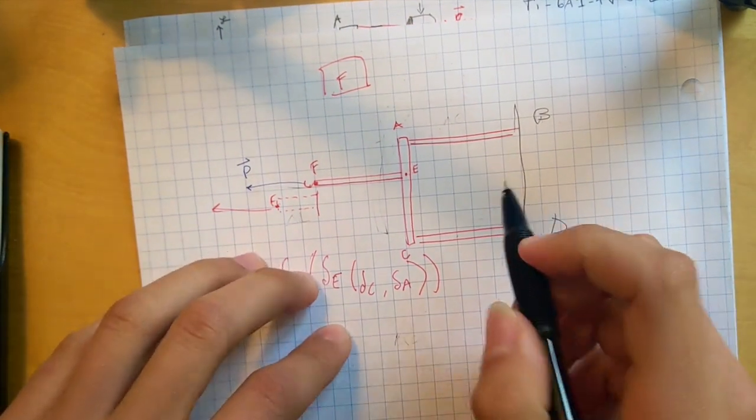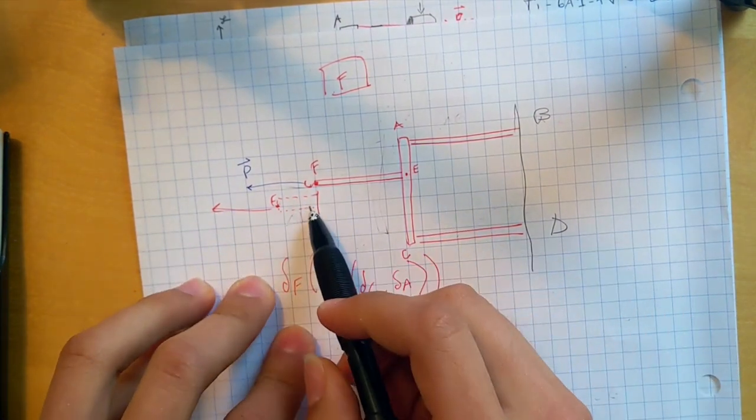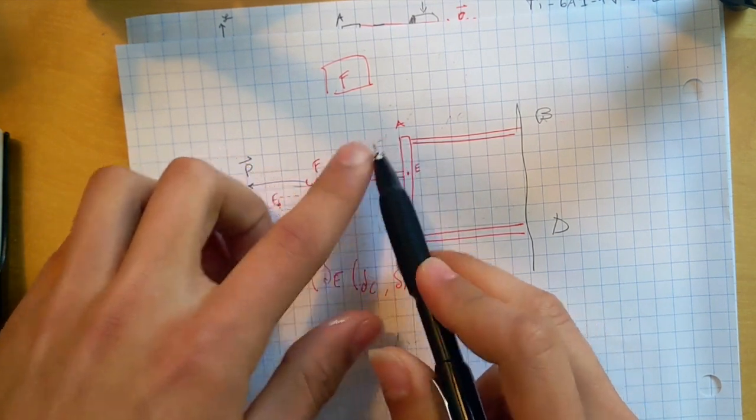Let's try this out. To find where F ends up, we need to know where E ends up, right? Wherever that ends up.